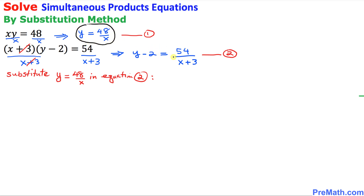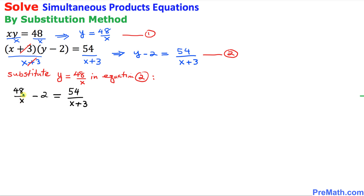In the next step we are going to substitute y equals 48 over x into equation number two. Wherever we see y we replace it with 48 over x, giving us 48 over x minus 2 equals 54 over x plus 3. We now have a rational equation with fractions, so we want to remove those fractions by focusing on the denominators: x and x plus 3.